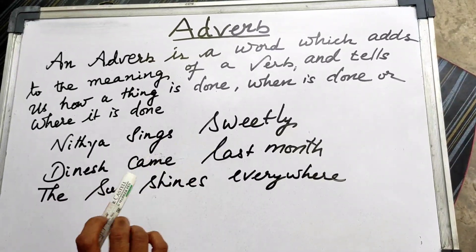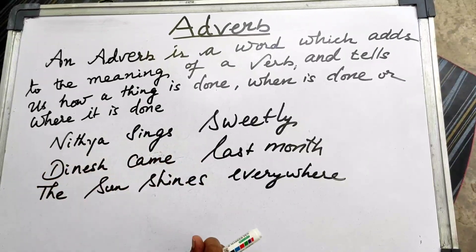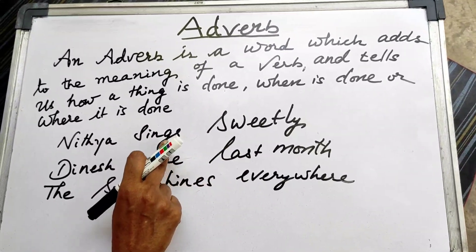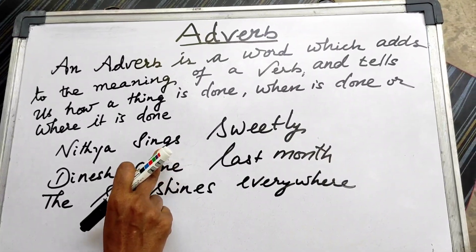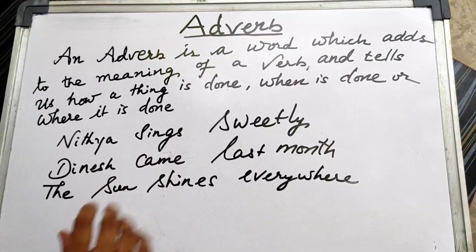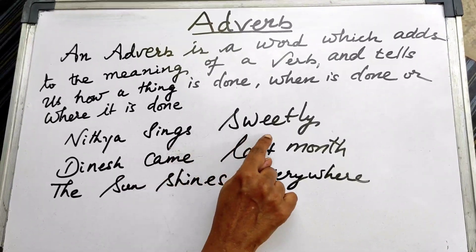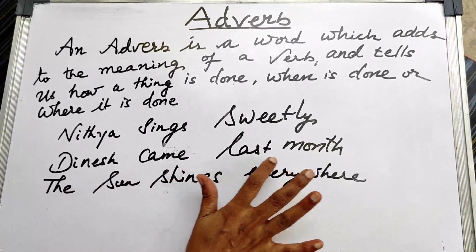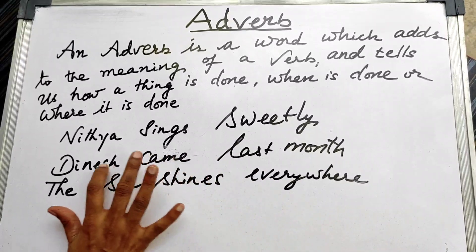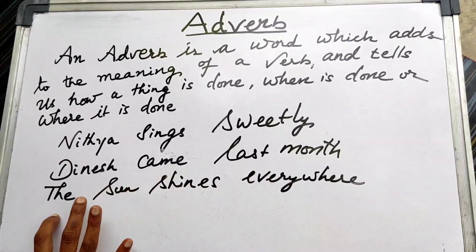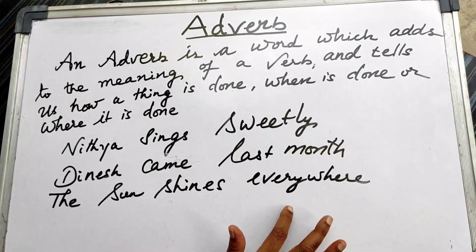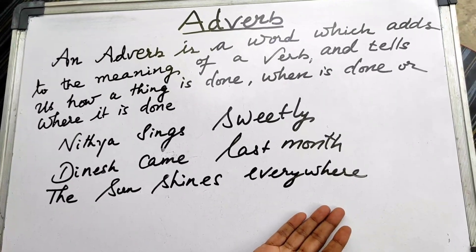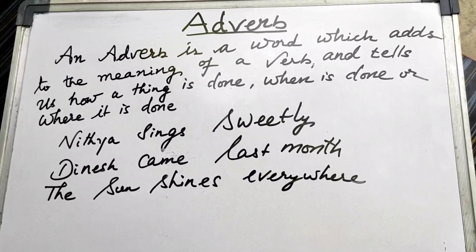Let us see some examples. 'Nitya sings sweetly' — how does Nitya sing? She sings sweetly. So you are adding extra information about the verb 'sings.' Next, 'Dinesh came last month' — when did Dinesh come? He came last month. Then, 'The sun shines everywhere' — where does the sun shine? It shines everywhere.